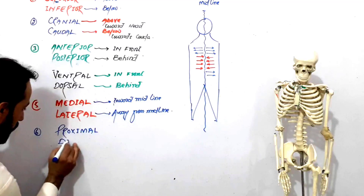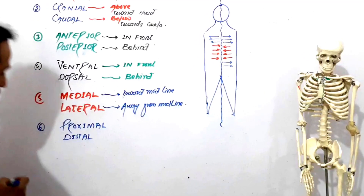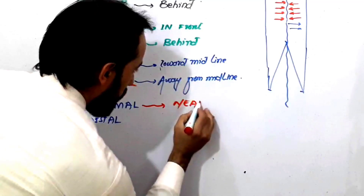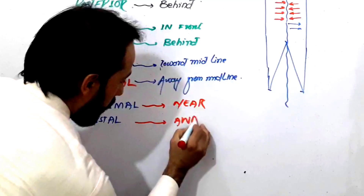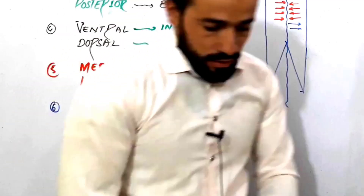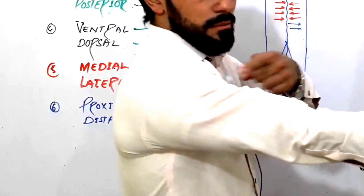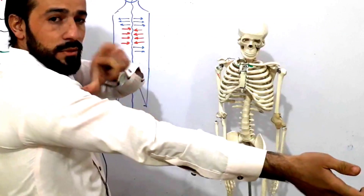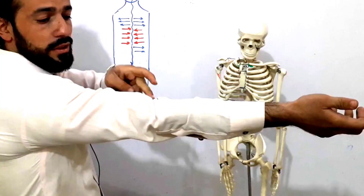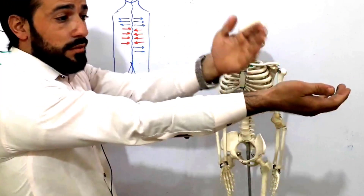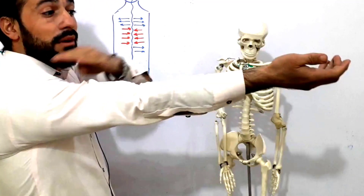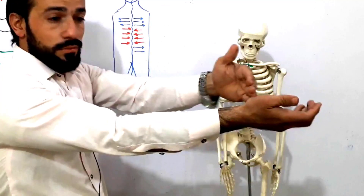Proximal and distal: proximal means near and distal means away or far. Look carefully — my elbow joint is proximal to my shoulder joint because there is very little distance in between. But there is a very much greater distance between the wrist joint and the shoulder joint, so my wrist joint is distal to my shoulder joint.